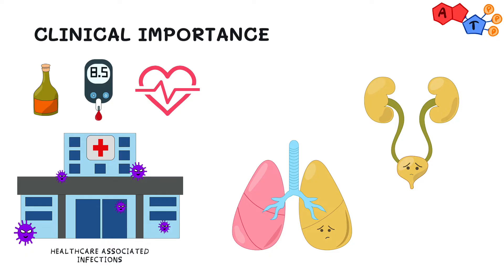Bacteremia and secondary spread to other areas, such as the meninges and liver, can also occur.